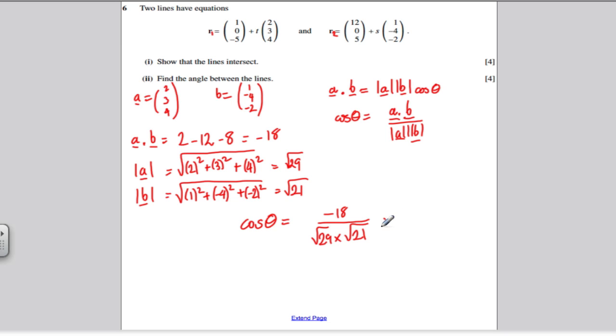And we get that the cosine of the angle is minus 0.7293968, etc. Keep that in the memory of your calculator. To work out the angle, take the inverse cosine of this. And you get the answer 137 degrees to three significant figures.